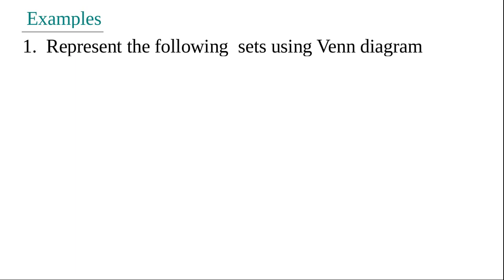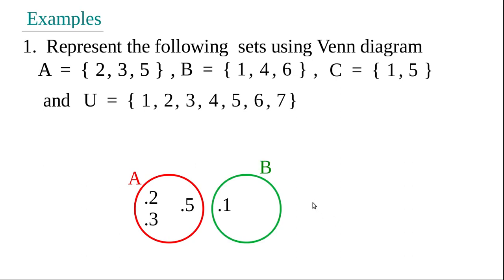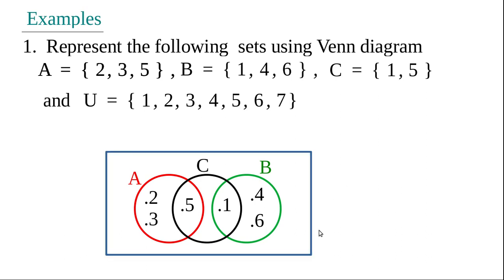First example: represent the following sets using a Venn diagram. Draw circle A with elements 2, 3, 5. Draw circle B with elements 1, 4, 6. Draw circle C with elements 1 and 5, positioned to overlap those elements. The universal set is represented by a rectangle covering all subsets, named U, and the element 7 is written inside U but outside all the circles.